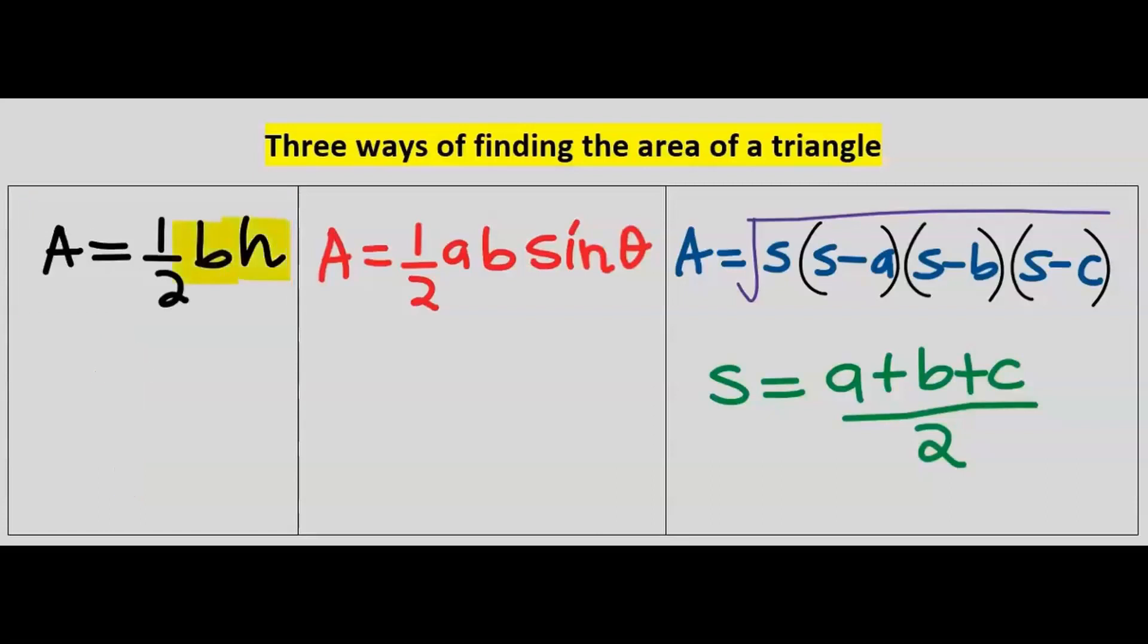The first is when you have the base and the height. Next is when two sides are given and an angle. The next one is when you have three sides, no height and no angle, where s is the semi-perimeter, which is the addition of the three sides divided by two. Any of these can help you find the area of a triangle.